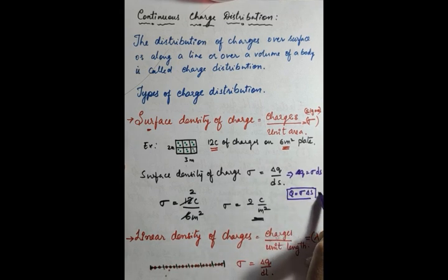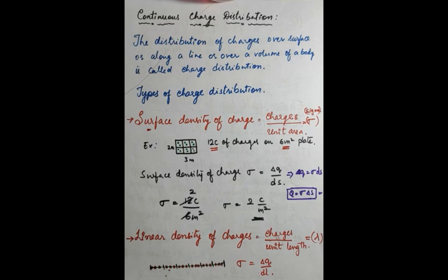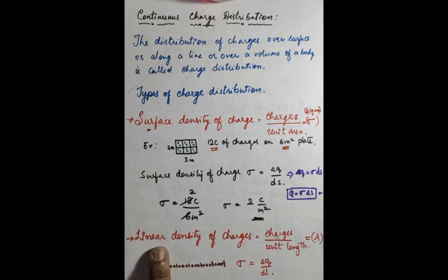So surface density of charge is charges per unit area — on one unit area, how much charge is present. That is the surface density of charges. Next we will discuss linear density of charge, which relates to length.